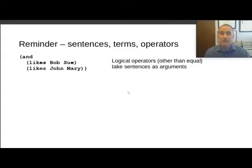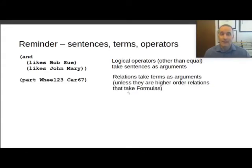But that's the only value that actually applies there. It's true or false. And contrast this with the relation part. It's not a logical operator. And it takes terms as its arguments, not sentences that have a truth value. Wheel 23 denotes something in the world, as does car 67.